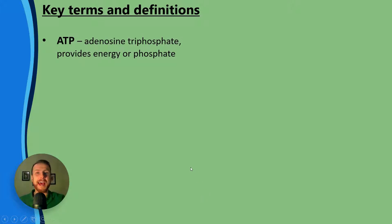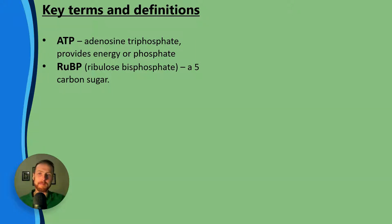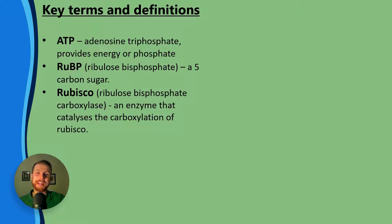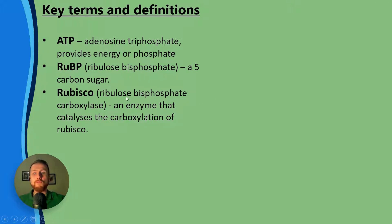First of all, we have ATP — adenosine triphosphate. That provides energy in small manageable amounts and it's broken down in a single step reaction. We have RUBP, that stands for ribulose bisphosphate, and that's a five carbon sugar that kicks off the Calvin cycle. Rubisco is an enzyme — it's the enzyme that catalyzes the carboxylation of RUBP, where carbon dioxide is added to our five carbon RUBP to make a six carbon compound. Rubisco is short for ribulose bisphosphate carboxylase — carboxylase because it catalyzes the carboxylation.